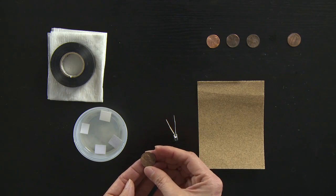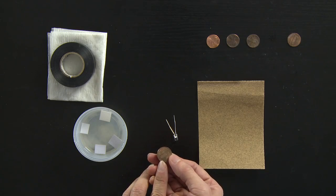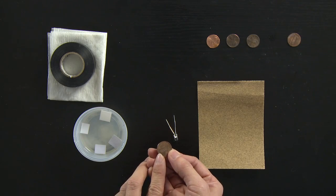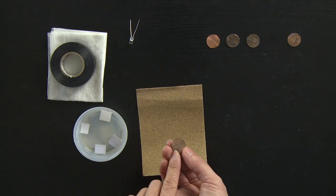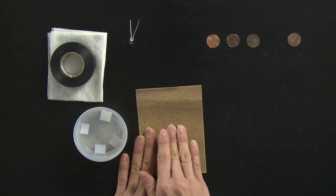We're going to expose that zinc center by sanding off one face of the penny. A little tip is that the Lincoln Memorial side, the tail side of the penny, is easier to sand off. So I like to take my sandpaper, put my penny with the Lincoln Memorial side down, and then just sand off as much as I can.